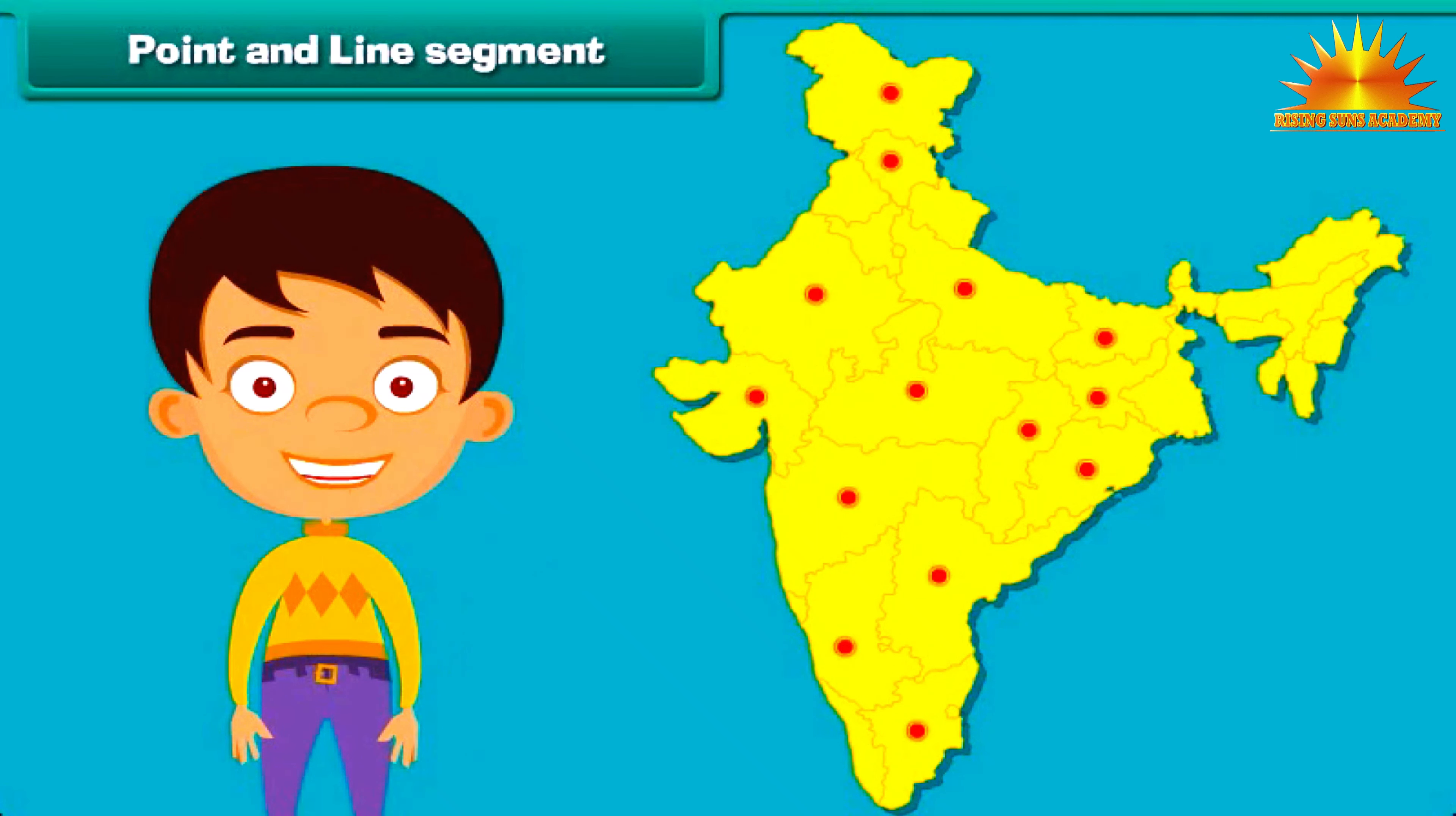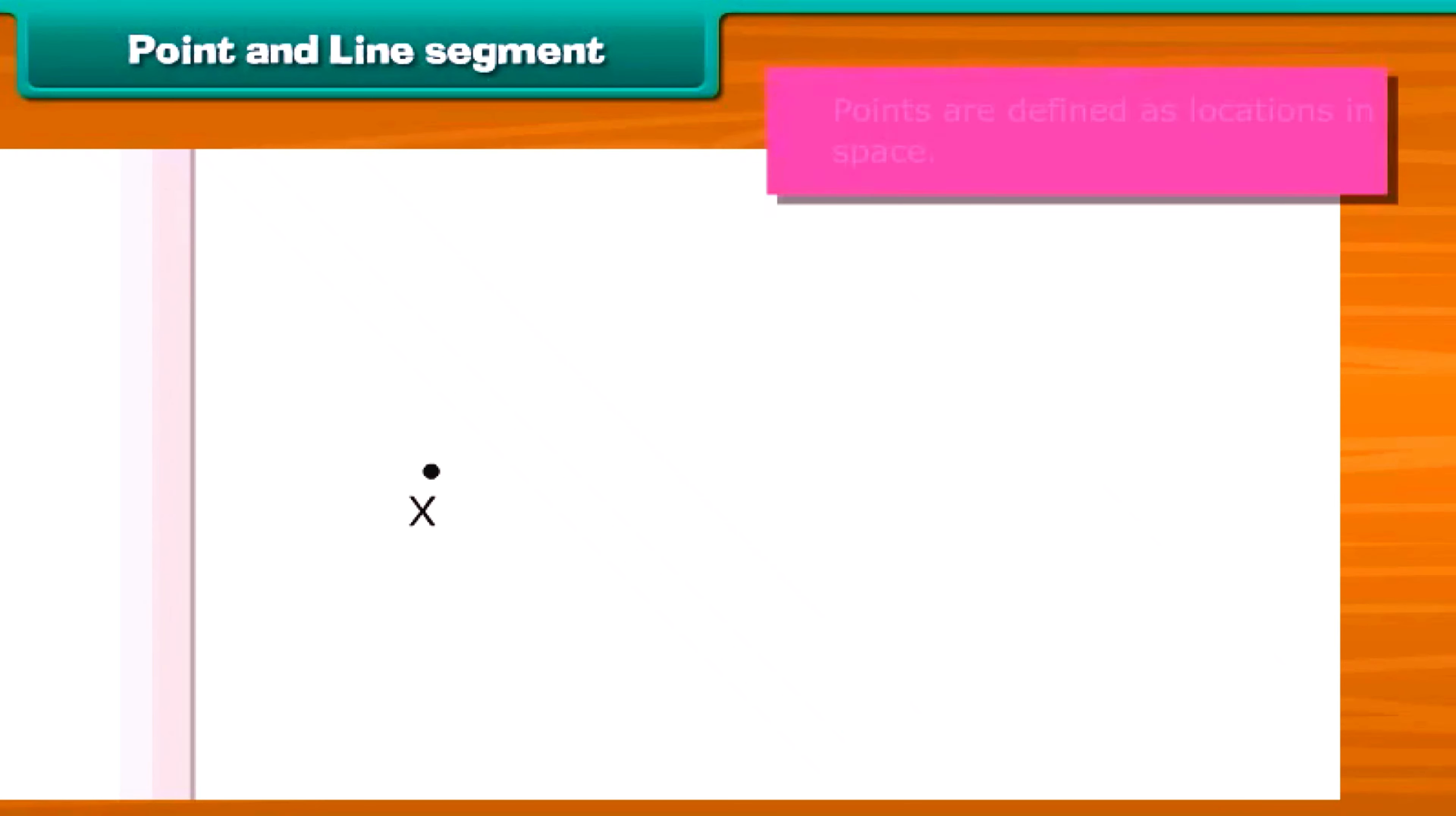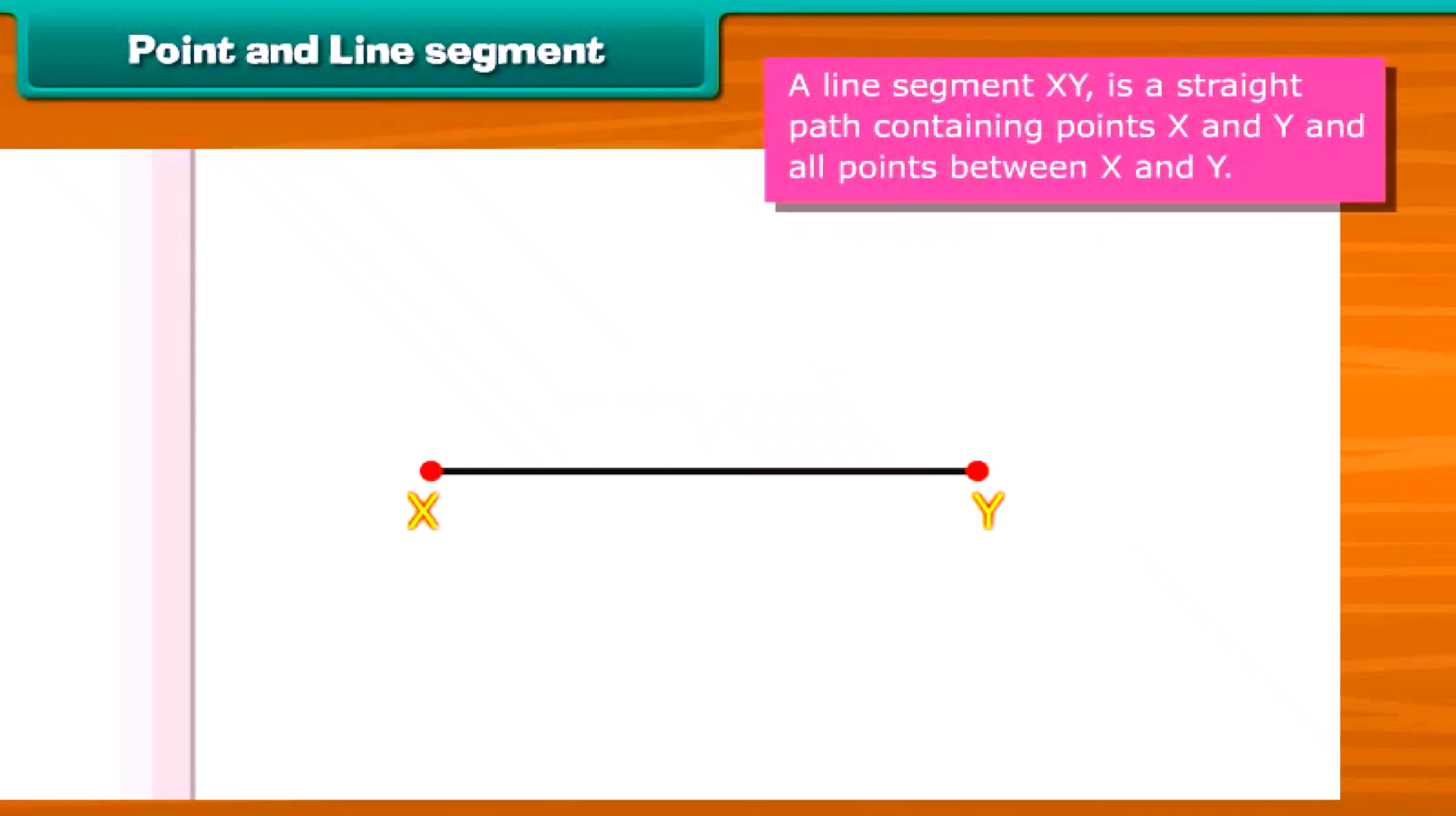Look at this Indian map. We see that the cities are represented by dots. These are called points. In geometry, points are defined as locations in space. They tell about the position of objects. What if the two points are connected? We will get a line segment. A line segment XY is a straight path containing points X and Y and all points between X and Y.